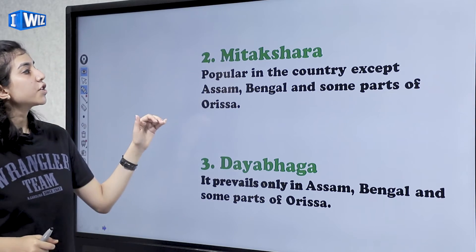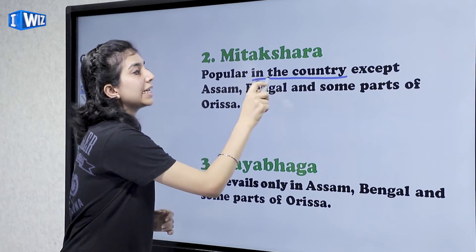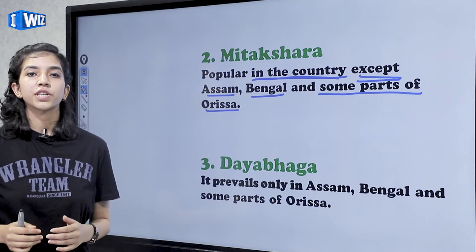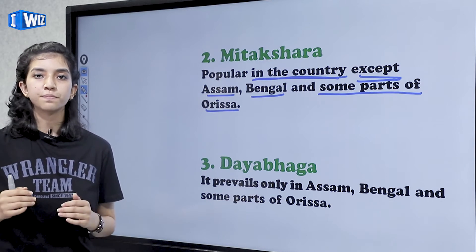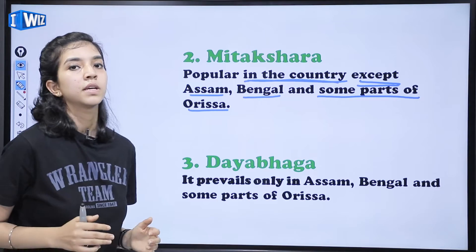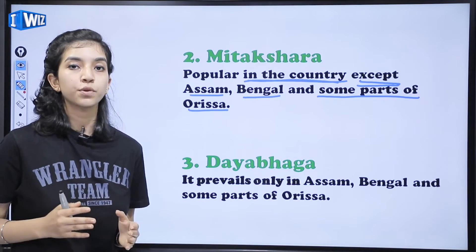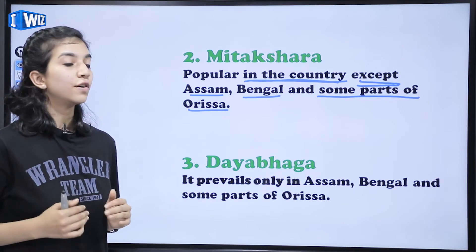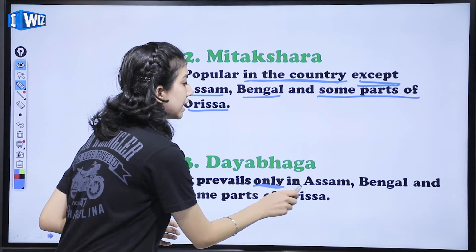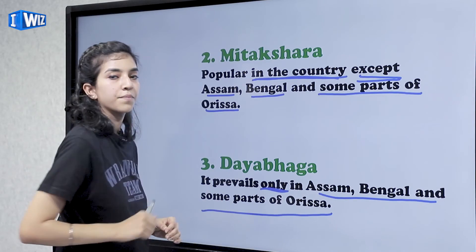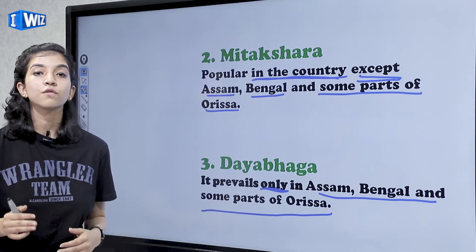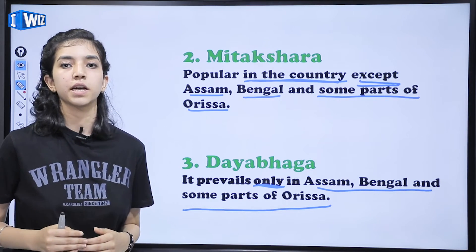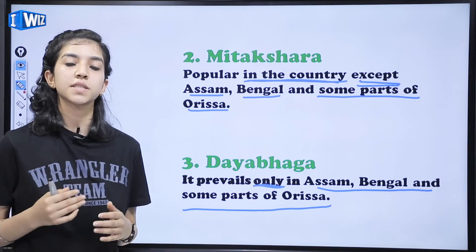The second key term is Mitakshira — it is prevalent across the whole country except Assam, Bengal, and some parts of Odisha. Under Mitakshira, as soon as a child is born, they get ownership in the ancestral property, equal to that of their father's ownership. The proportion of ownership is equal for every member regardless of whether they are a child or an adult. The third key term is Dayabhaga — it prevails only in Assam, Bengal, and some parts of Odisha. Under Dayabhaga, when a child is born, they do not get ownership in ancestral property. They become part of the family business, but ownership stays with the father and transfers to the son or daughter only when the father passes away.